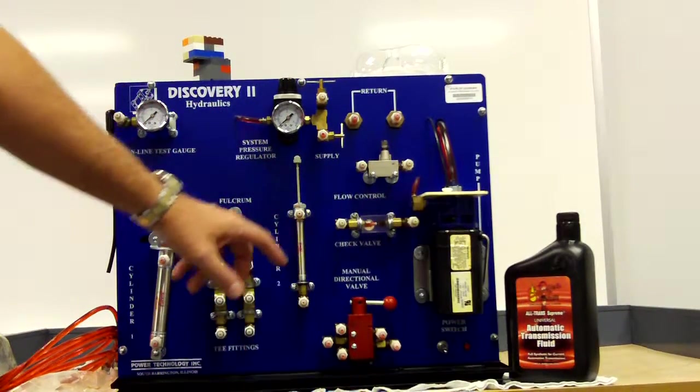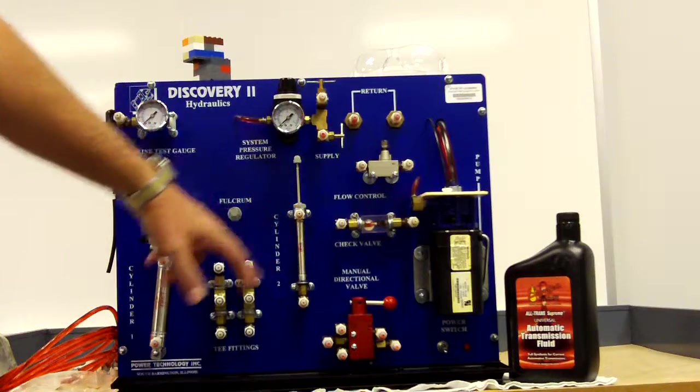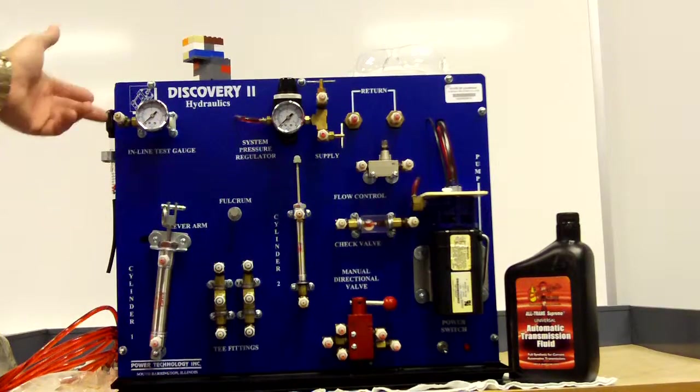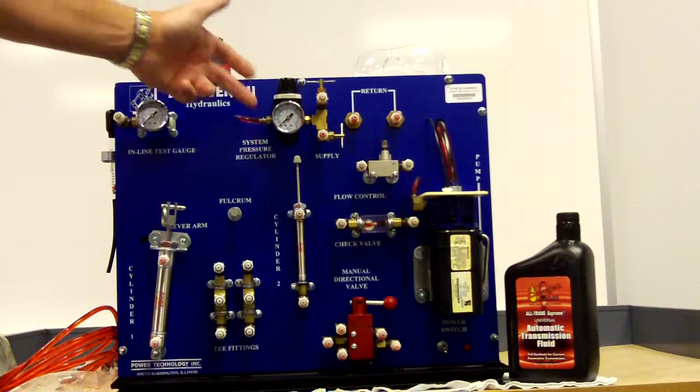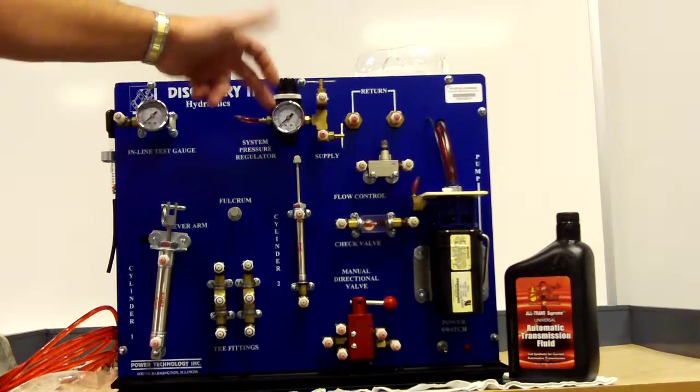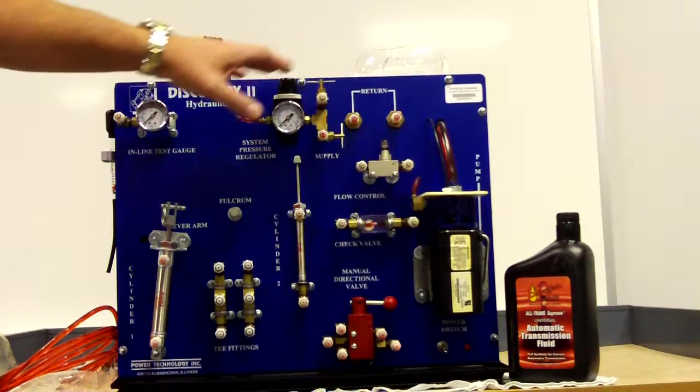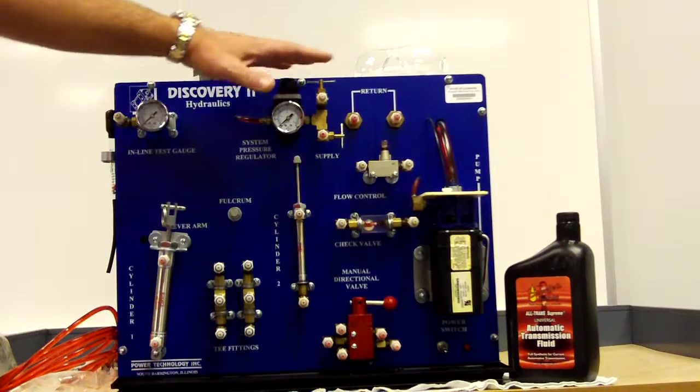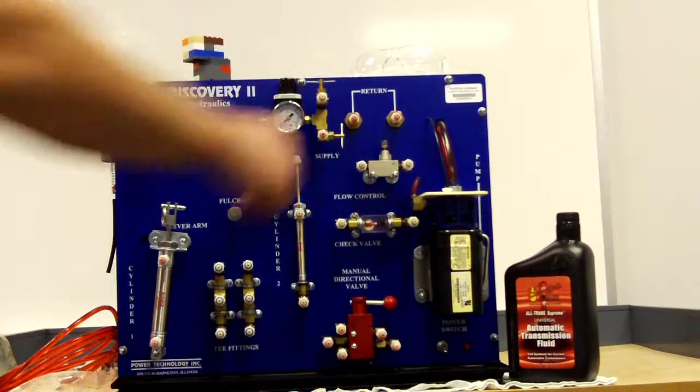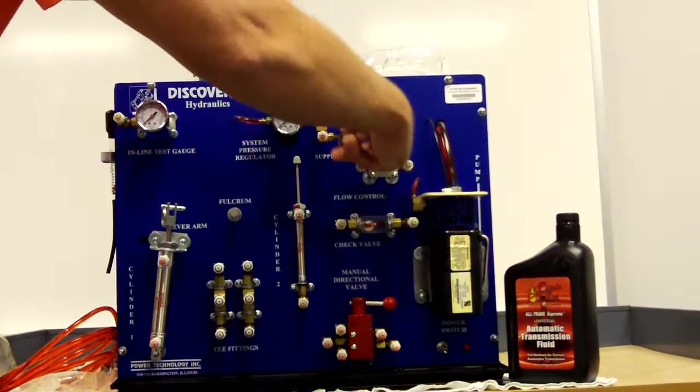Directional control valve, two different types of cylinders, some T's. This is an inline gauge, and this is another pressure regulator. We could actually run off the pump to the location. This is where the feed from the hydraulic fluid comes from.